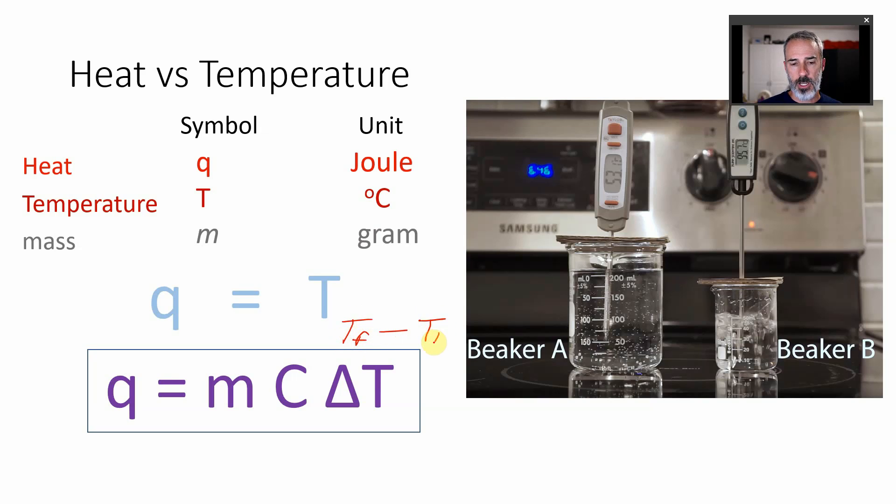So when you're doing change in temperature it's important to know the change in temperature is always the final temperature minus the initial right? And you may know this about science that's always true right? Change in velocity is always the final velocity minus the initial velocity, always final minus initial.